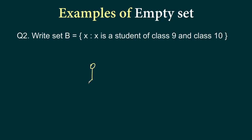That student can be either a student of class 9 or he or she can be a student of class 10. At the same time, one person cannot be student of both class 9 and class 10, and hence our set B is an empty set.